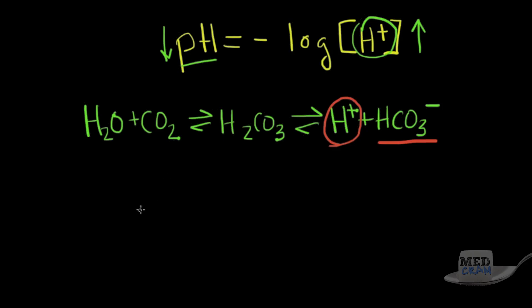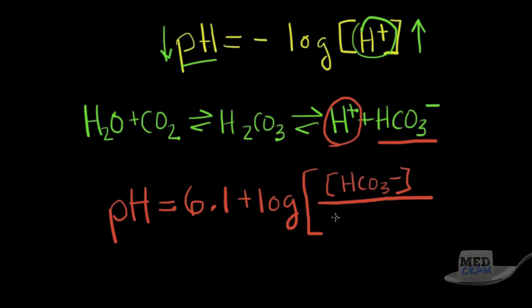You can see what happens is the bicarb plus the proton goes to carbonic acid. Carbonic acid freely diffuses into water, which the body could always use, and carbon dioxide, which the body can breathe out. So if we put that into a new equation, and if you're lost here so far, don't worry, we're going to get to the final equation that I want you to sort of commit to memory, and that's this Henderson-Hasselbalch equation, which the body is governed by, which is the pH of the body is equal to 6.1 plus the log of concentration of bicarb over the pCO2 times 0.03.